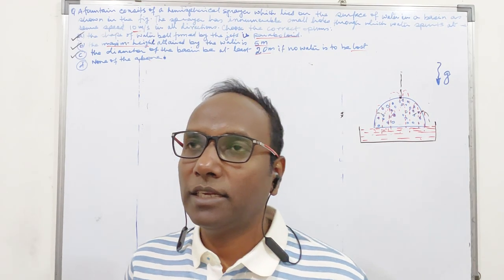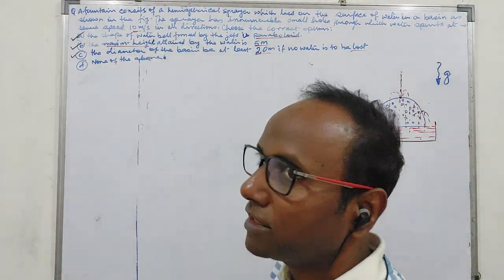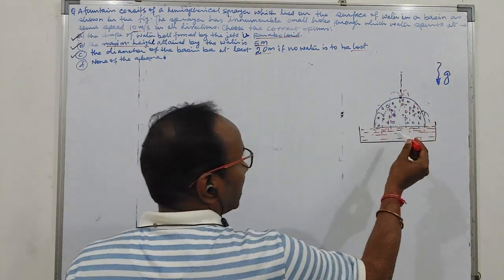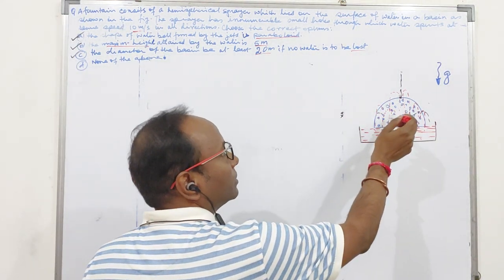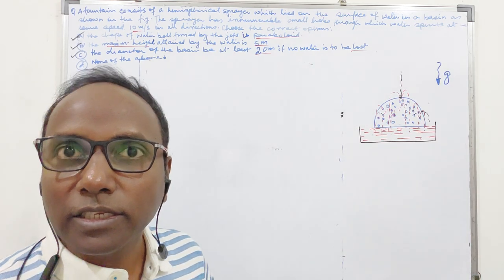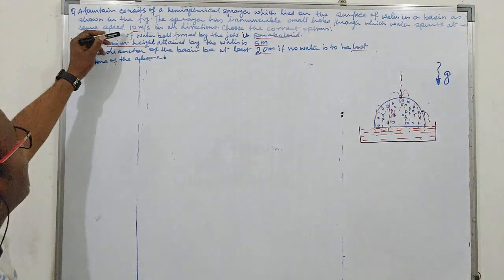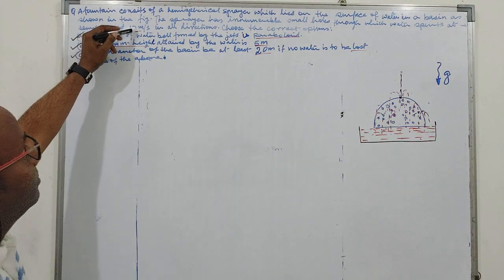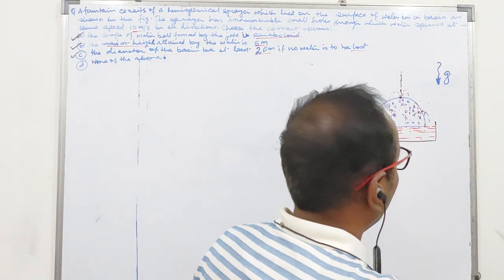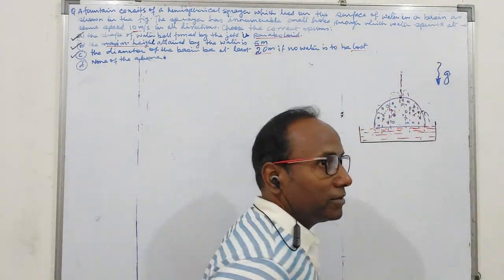Hello everyone, let us discuss one question on fountain. It says that there is one hemispherical fountain which has innumerable number of small holes, through which the water is spurting out at a velocity of 10 meter per second in all directions. These holes are in all directions of the hemisphere.